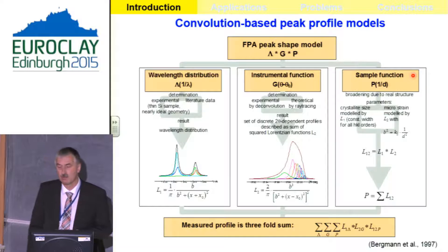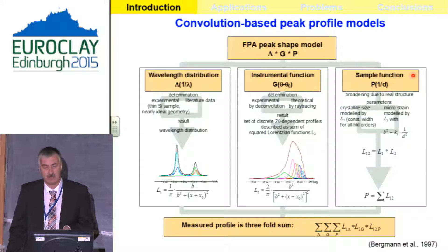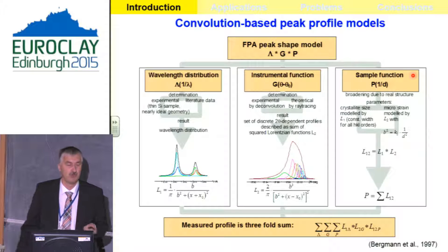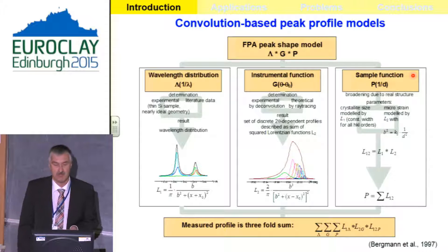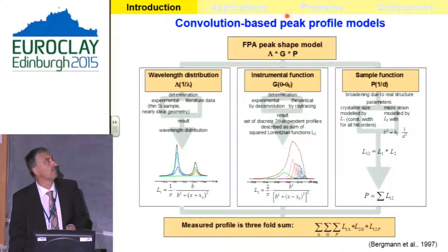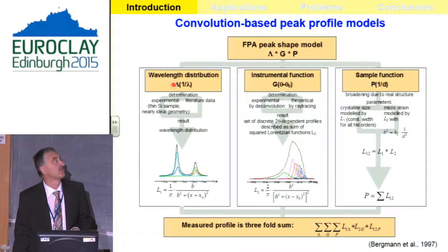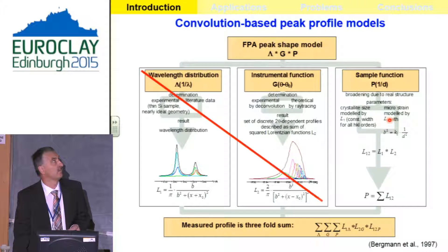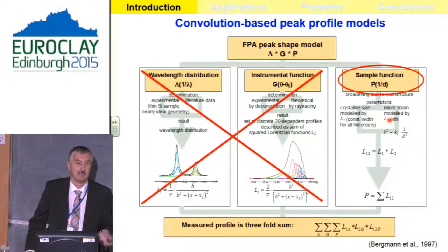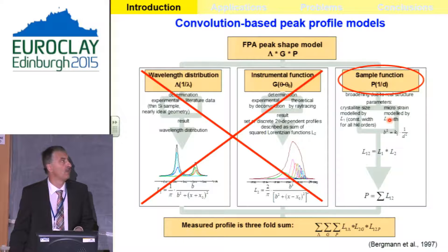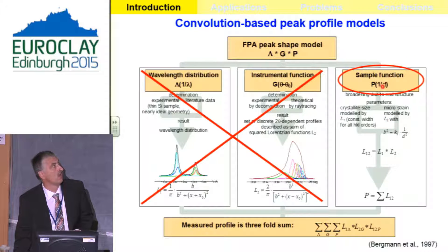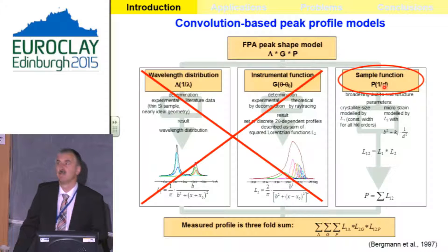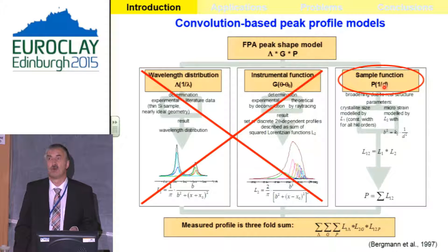During the development of new software, new methods and models were also introduced. One example is the so-called convolution-based peak profile. We know that a peak is defined by influences from the wavelength distribution, the geometry of the instrument, and the real structure of the sample. If we can calculate the instrument part beforehand, we can focus entirely on the sample function in reciprocal space, which makes the creation of models quite easy.